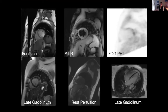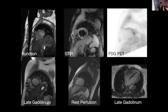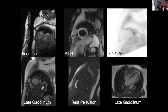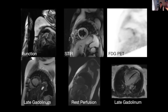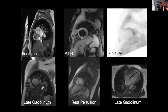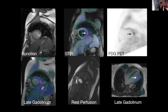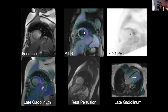On the PET MRI, LV function wasn't too bad and STIR imaging looked normal. However, late enhancement imaging demonstrated a small patch of fibrosis in the lateral wall, and the PET image revealed evidence of acute inflammation in the lateral wall in the area around where the late enhancement was. Without the overlying PET to detect active inflammation co-localizing in the area of late enhancement, we would have missed this lady's abnormal active inflammation.